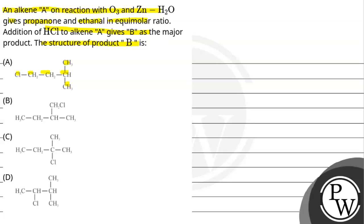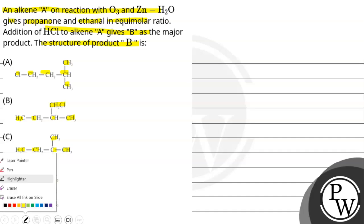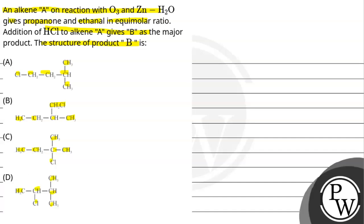Option B: CH3-CH2-CH(Cl)-CH2-CH2CH3. Option C: CH3-CH2-C(Cl)(CH3)-CH3. Option D: CH3-C(CH3)(CH3)-CH3. So the question asks what the structure of product B is.